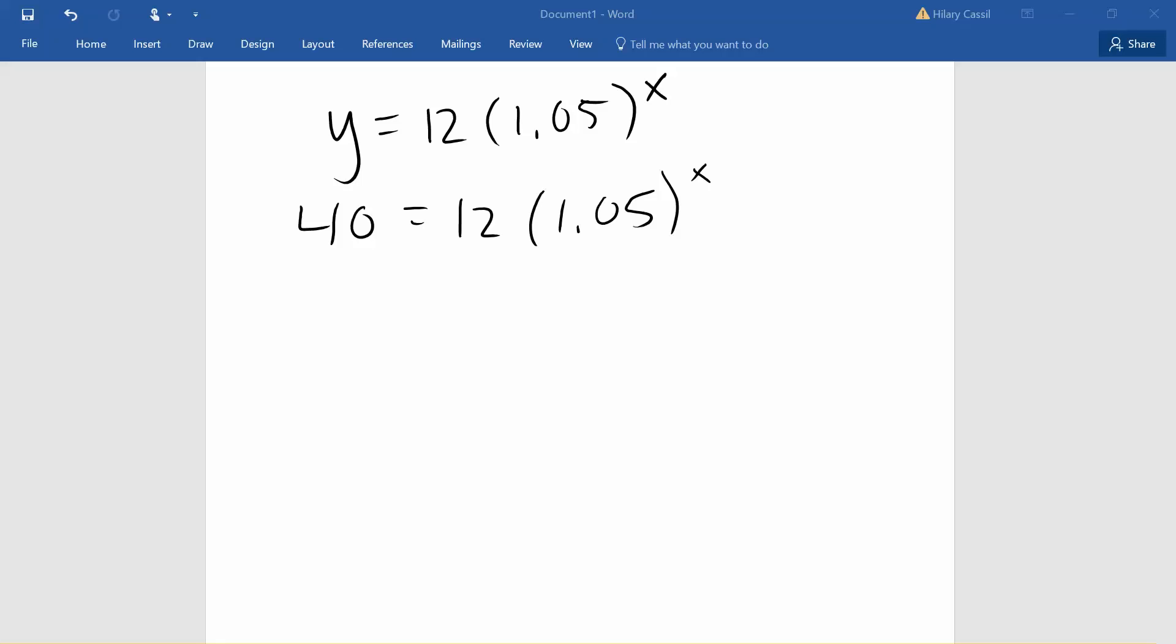So what we are going to do is put the left-hand side into y1 of the calculator and the right-hand side into y2, or vice versa, and we'll graph it to find the intersection. Our graph should look something like this, and y equals 40 is going to be a horizontal line. Y equals 12 times 1.05 to the x is going to be our increasing exponential function, and we are looking for where they intersect.